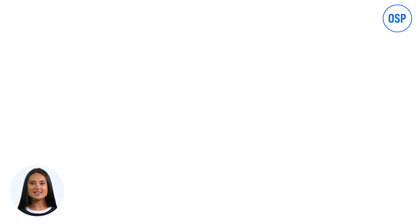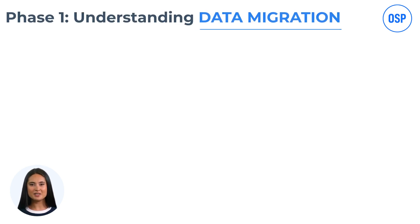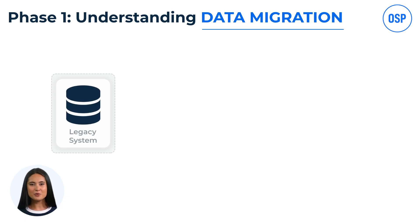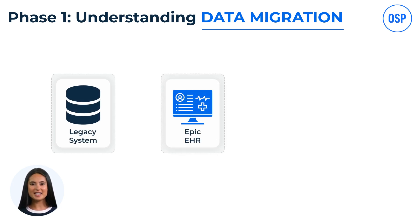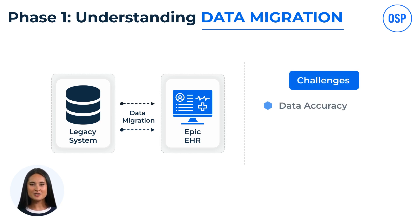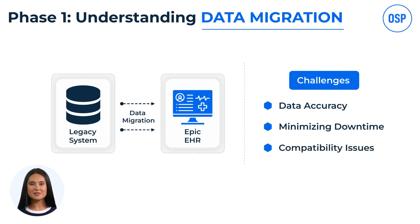The EHR data migration process is divided into five phases. Phase 1 is Understanding Data Migration. Data migration is the process of transferring data from one system to another — in our case, moving data from legacy systems to Epic EHR. This process is crucial for maintaining data integrity, improving patient care, and ensuring compliance with healthcare regulations. Common challenges include ensuring data accuracy, minimizing downtime, and dealing with compatibility issues between systems. Proper planning and execution are essential to overcoming these hurdles.